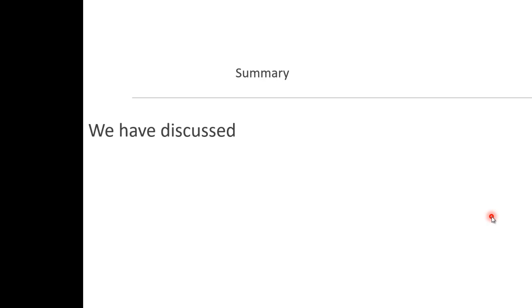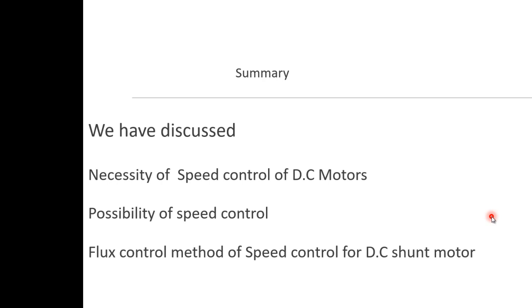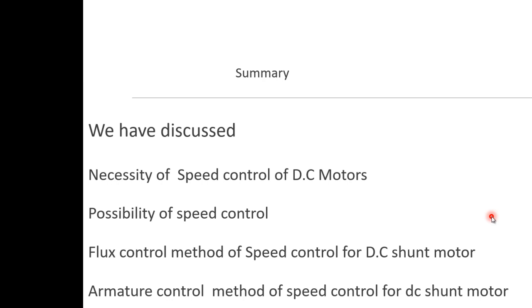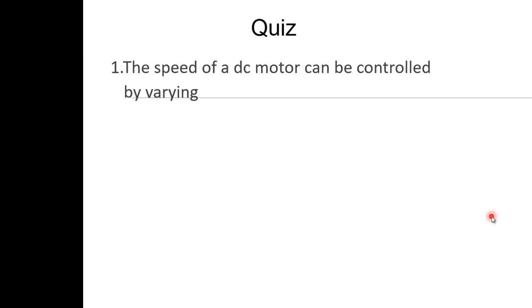In this session, we discussed the necessity of speed control of DC motors, the possibilities for controlling speed, and the details of the flux control method and armature control method for DC motors. We also covered the advantages and disadvantages of both controlling methods.